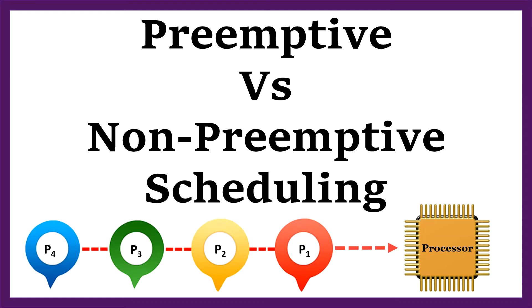Hey guys, this is Neha and welcome back to my channel about technology. In this tutorial we'll be discussing about primitive and non-primitive scheduling. A perfect scheduling ensures that a process executes efficiently and has a reduced waiting time. We'll see how primitive and non-primitive scheduling work to achieve these goals and how they differ from each other.